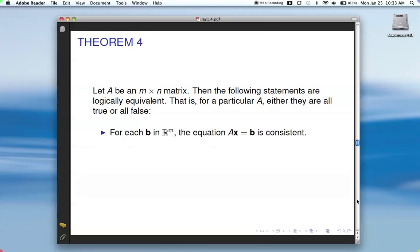First statement is, for each B in R M, the equation AX equals B is consistent. So that's saying, no matter what the right-hand side is, for this particular matrix A, AX equals B is always consistent.